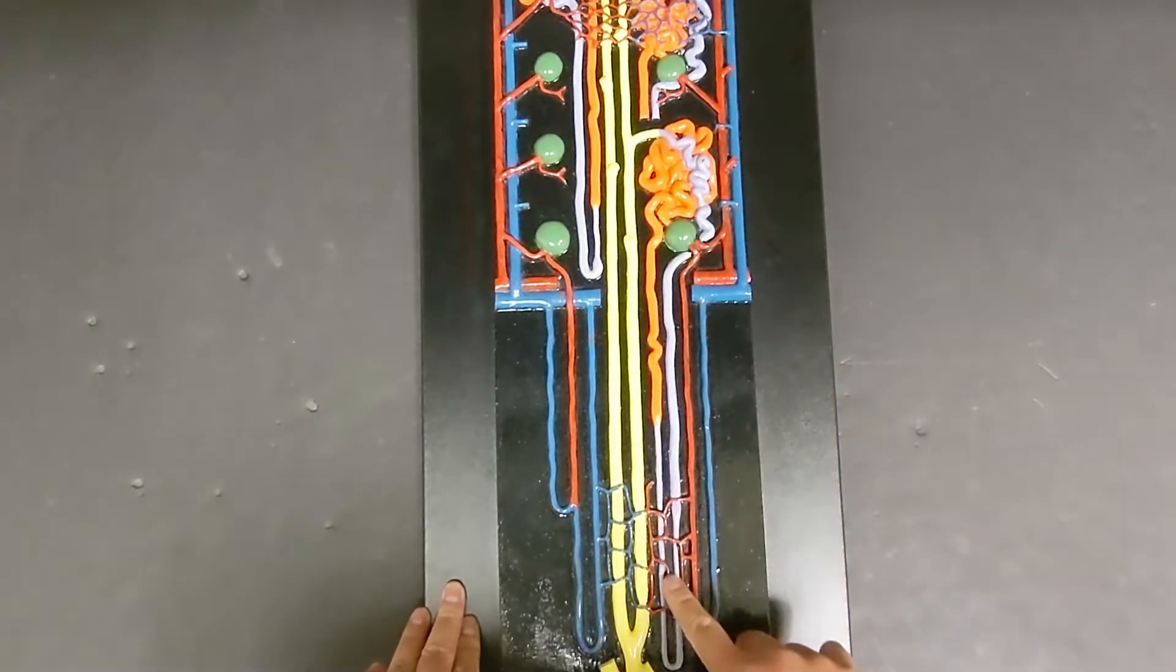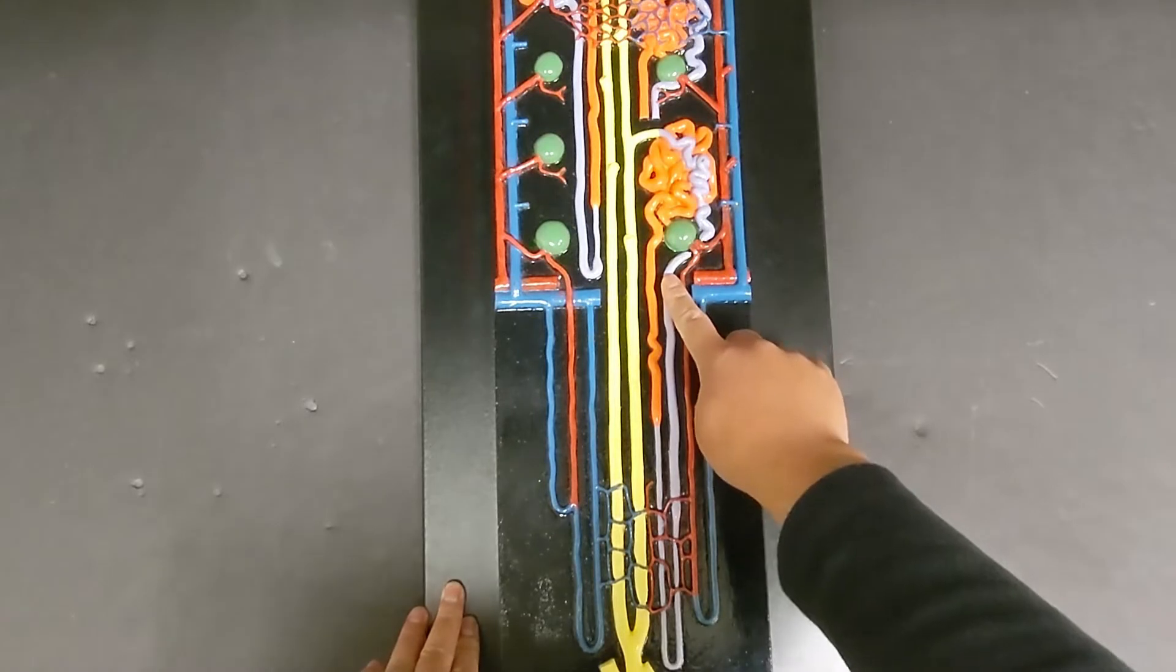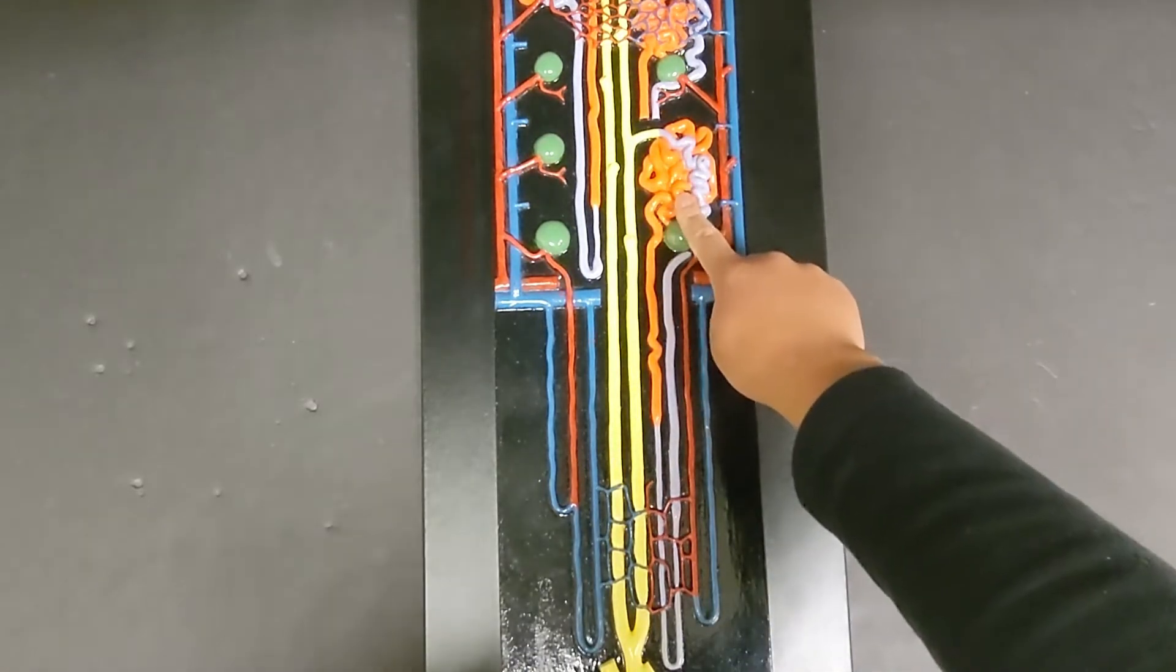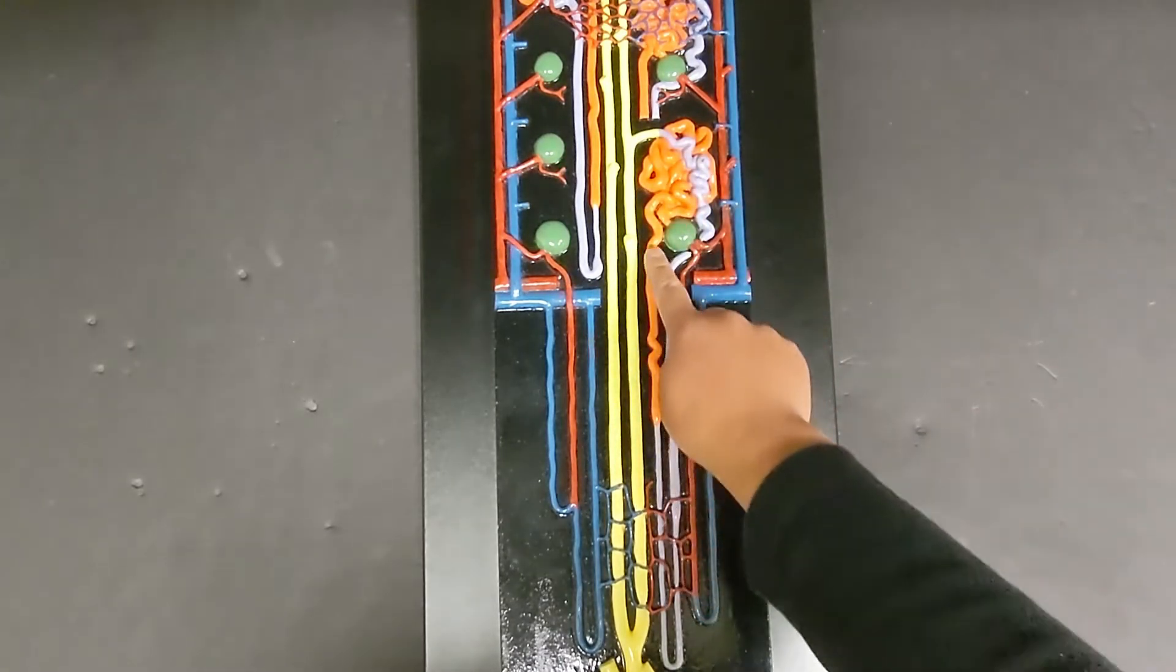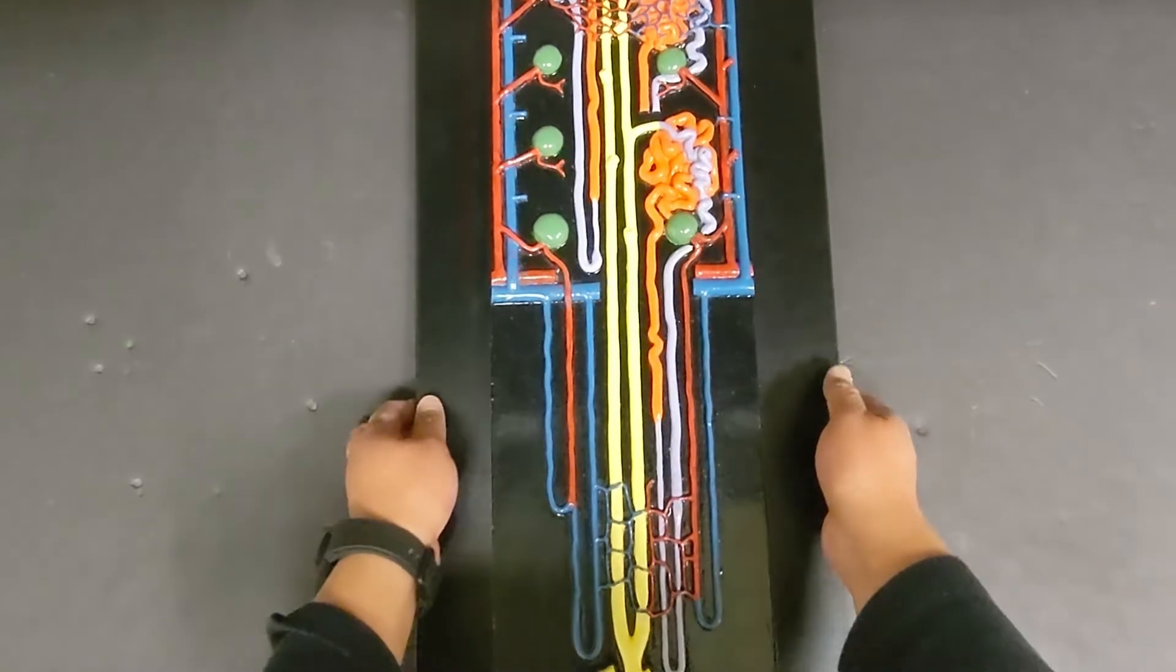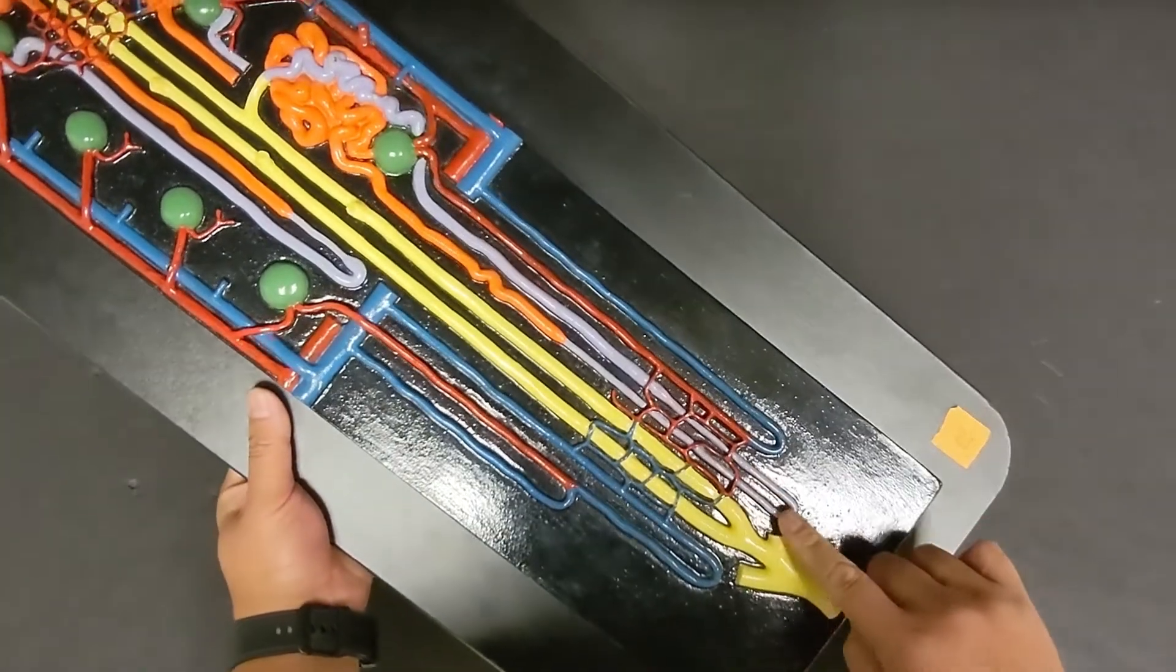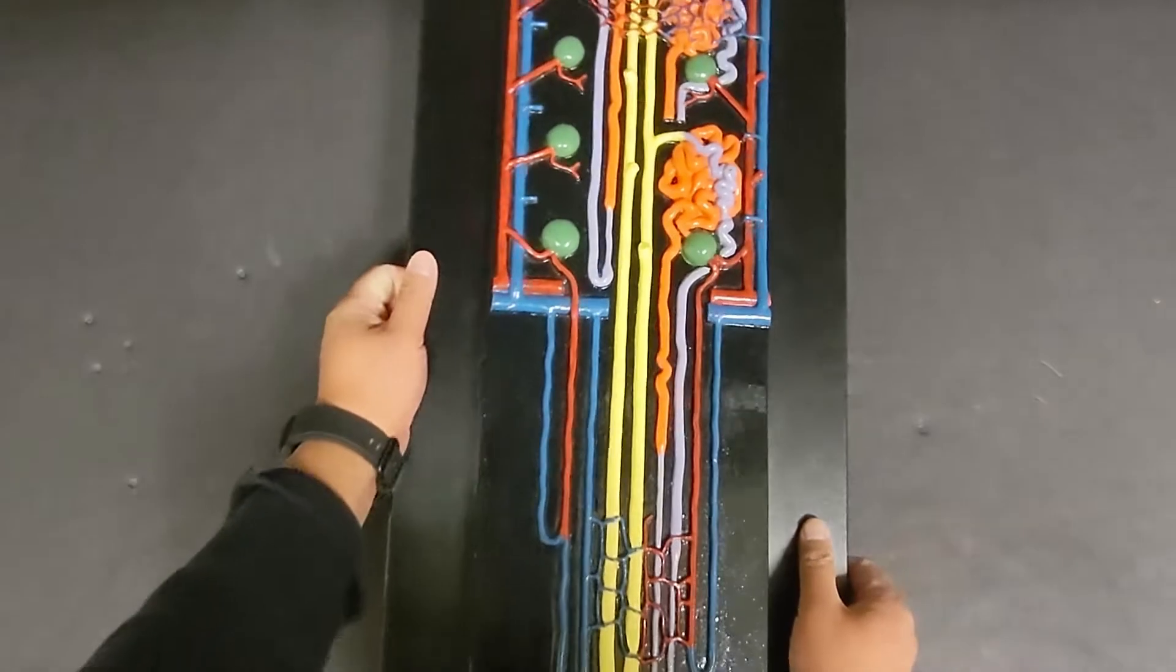This long U-shape is called the loop of Henle, sometimes otherwise known as the nephron loop. But if you look at the proximal convoluted tubule, you'll see that this side is going to be the descending limb of the loop of Henle. That is then going to go down all the way to where it starts to loop, and then go back up the ascending limb of the loop of Henle.